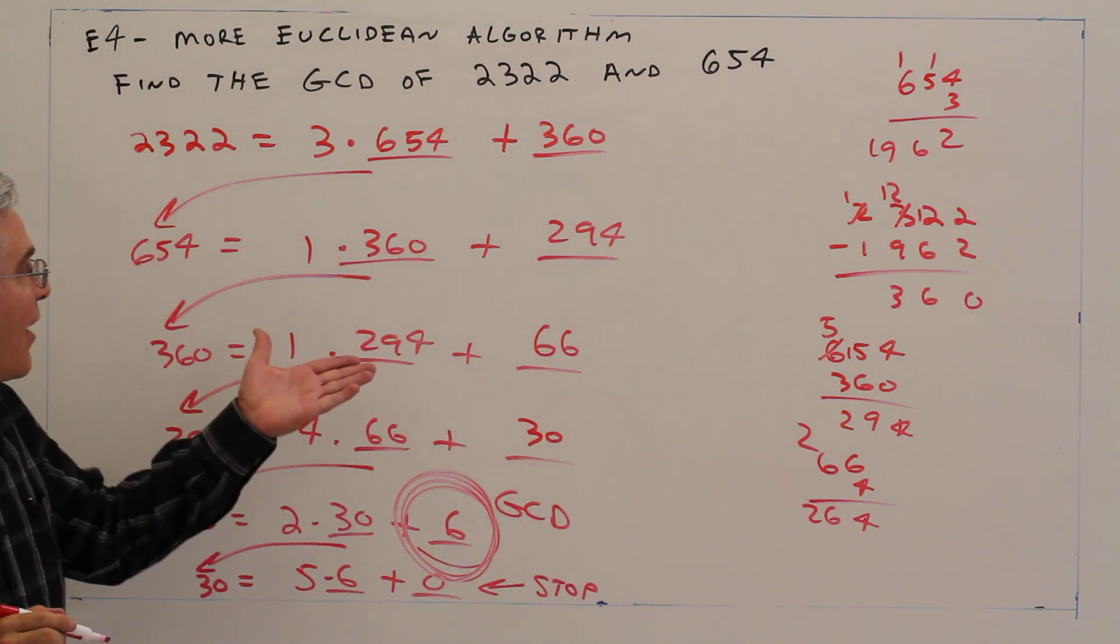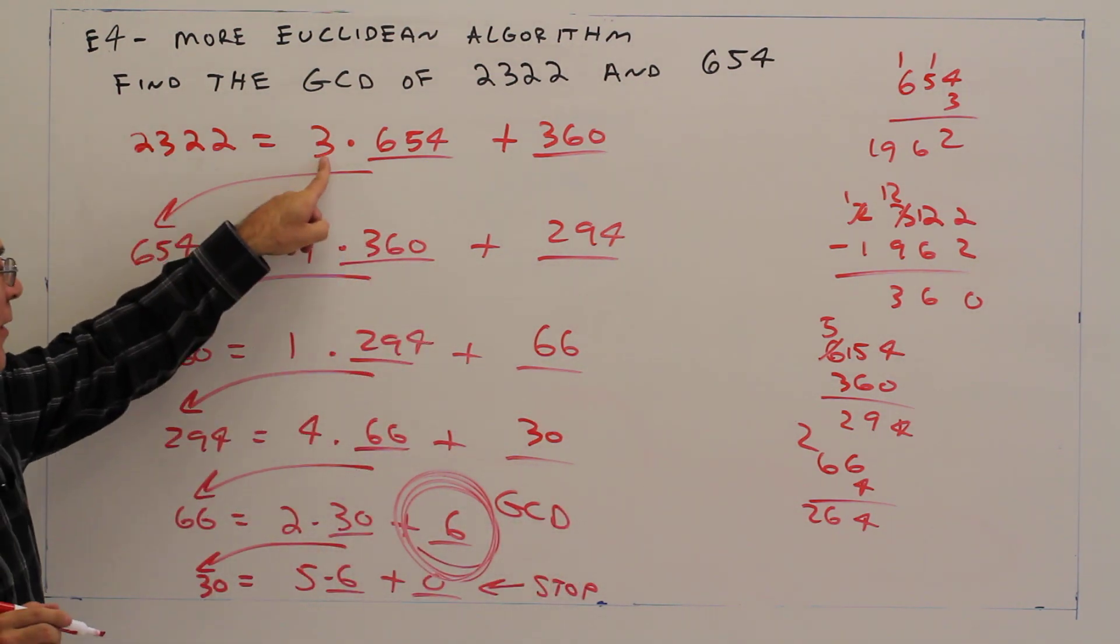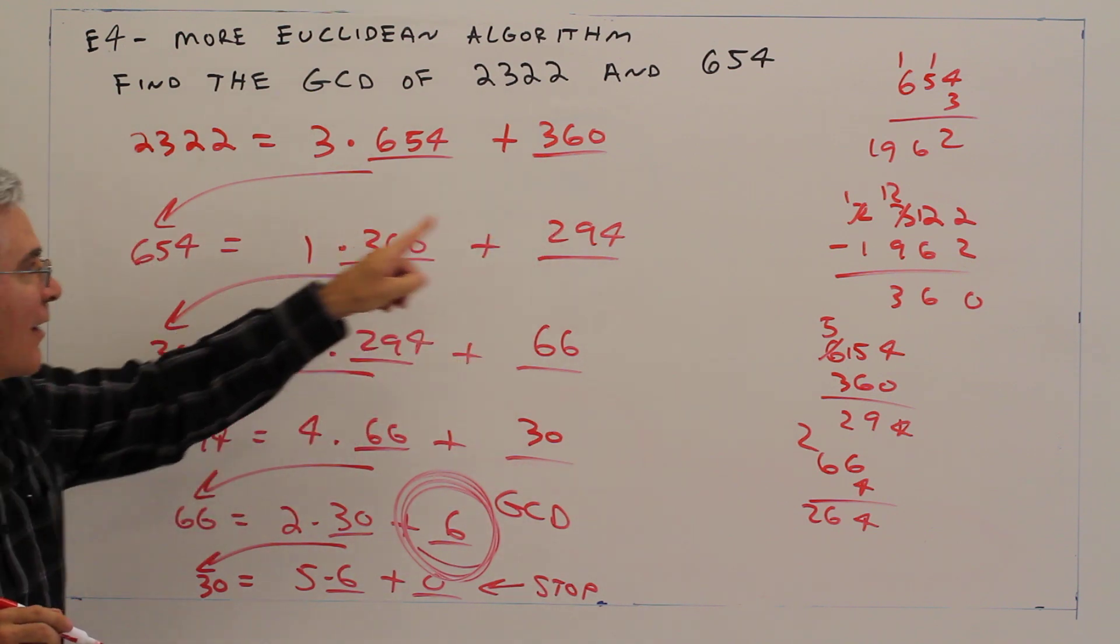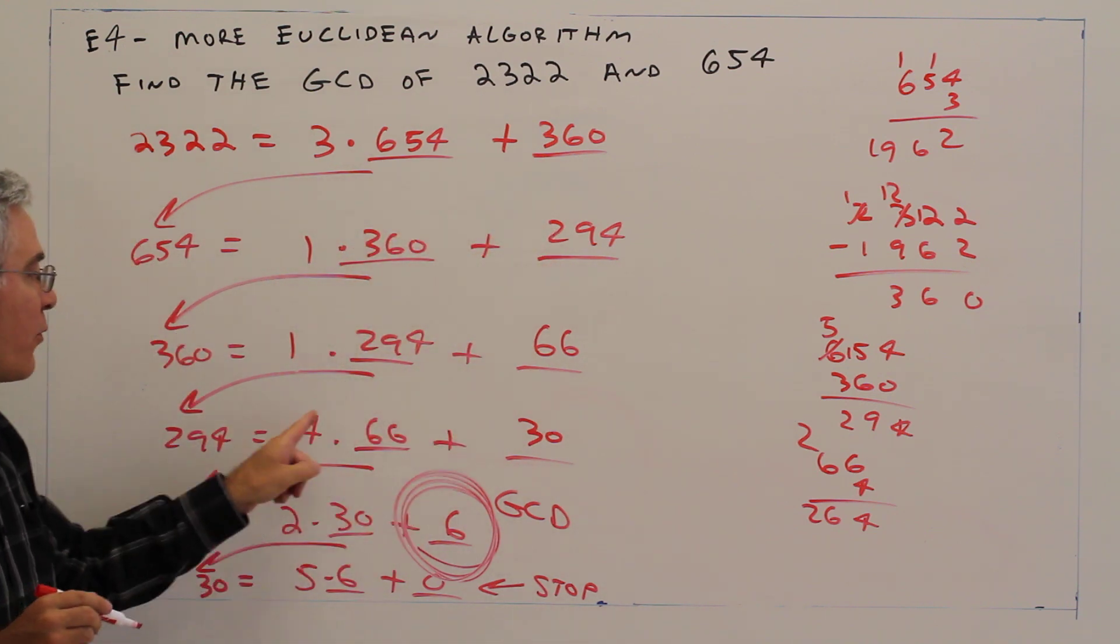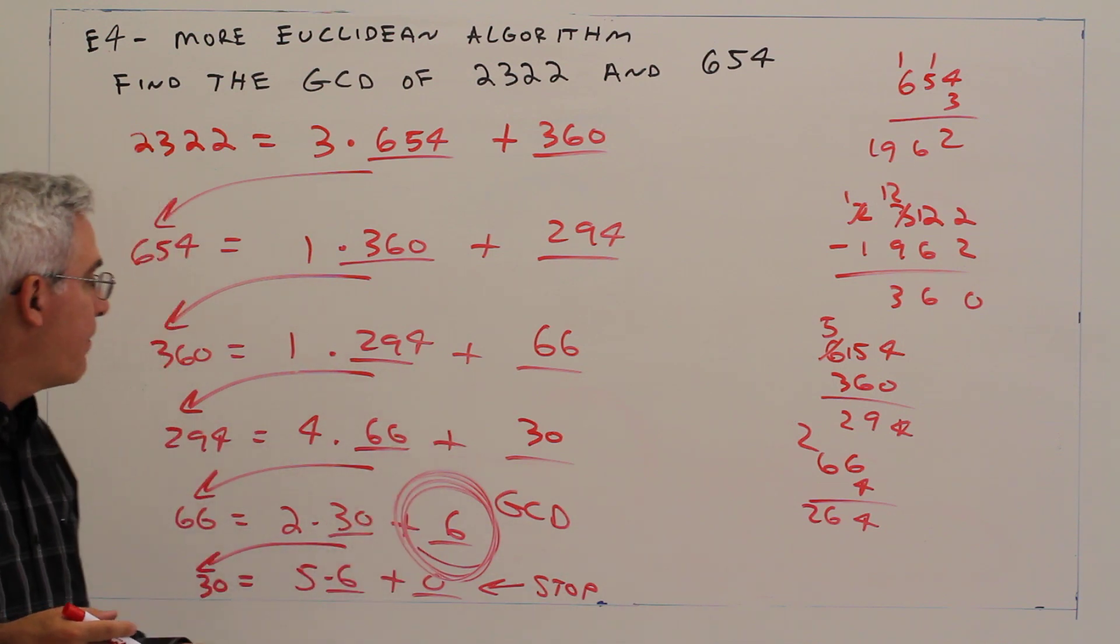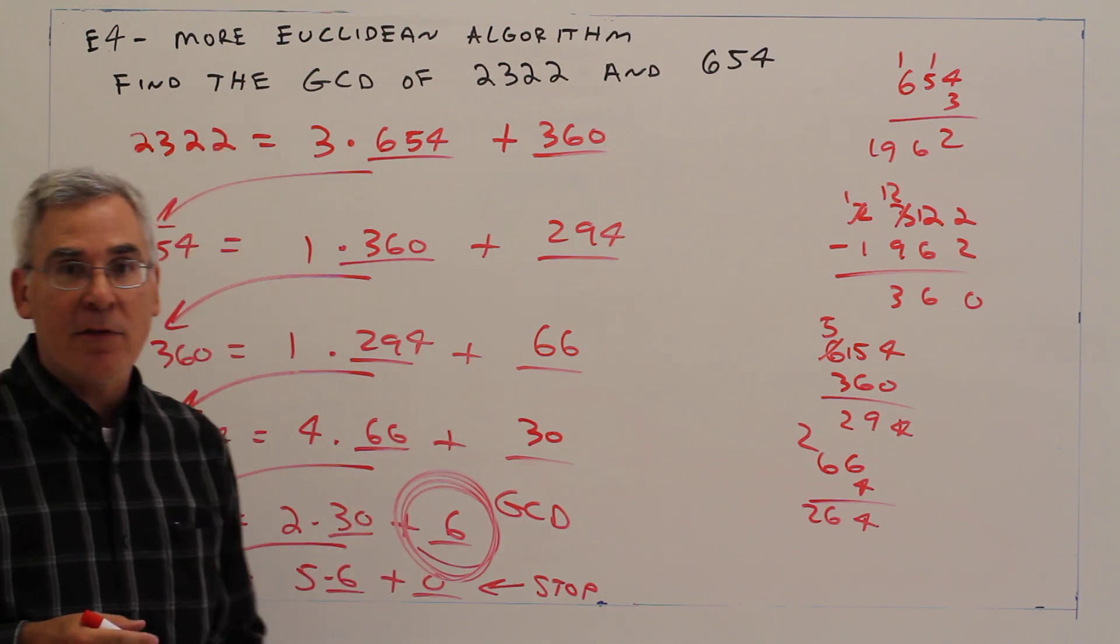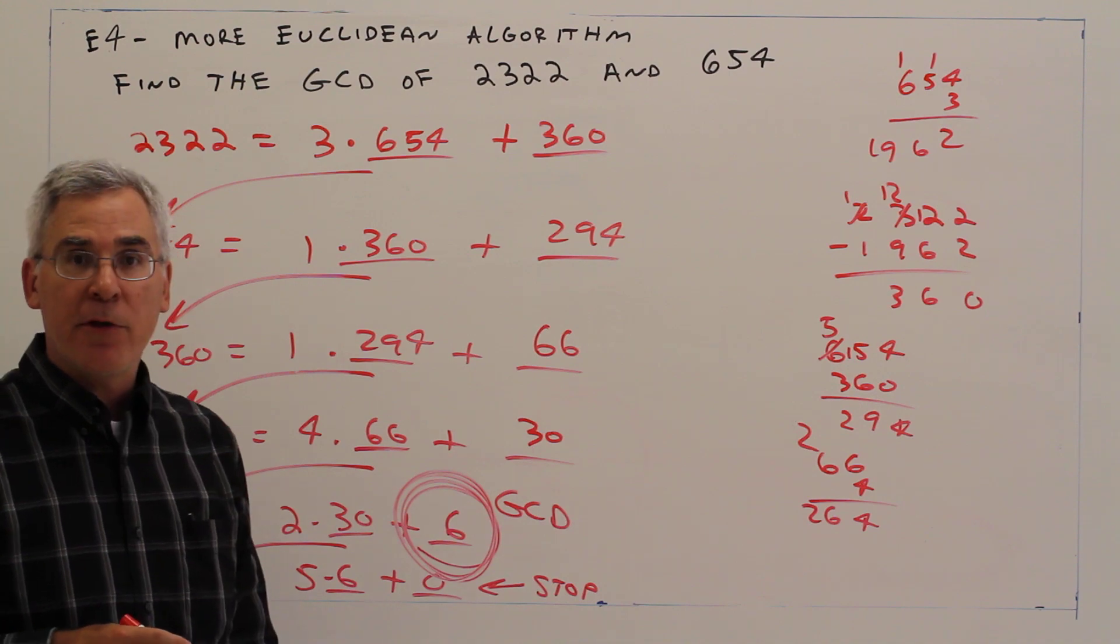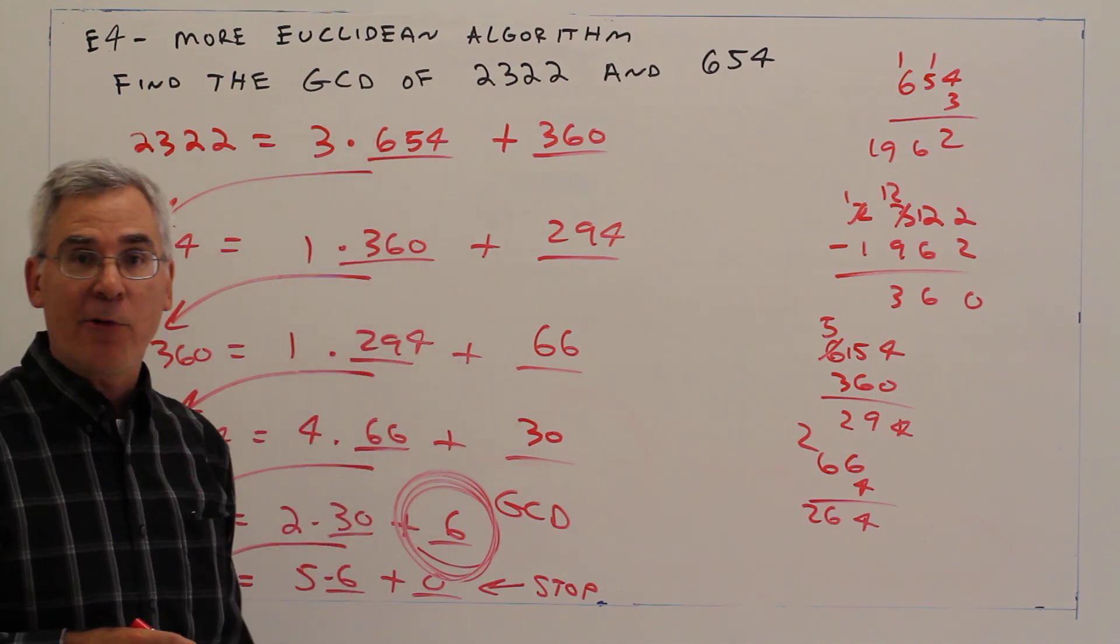And again, I just want to emphasize, all we're doing is subtracting three times difference, subtracting difference, subtracting difference, subtracting four times difference. It's that basis that I showed you before. All right, so that's one more example of the Euclidean algorithm with larger numbers.